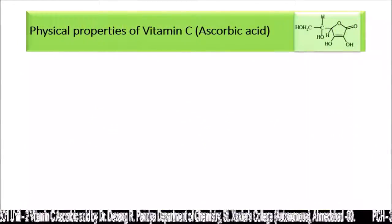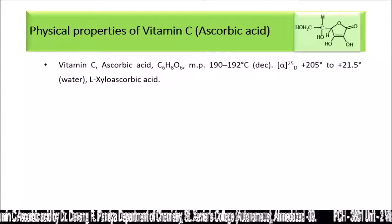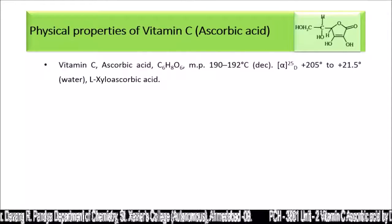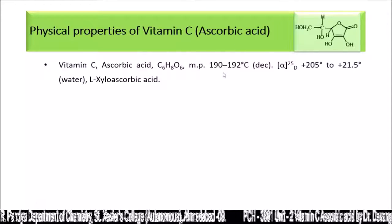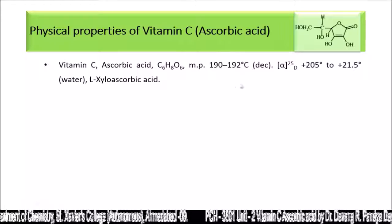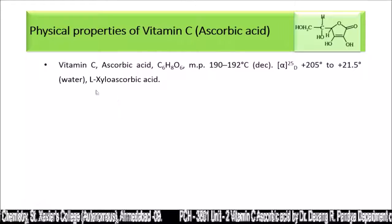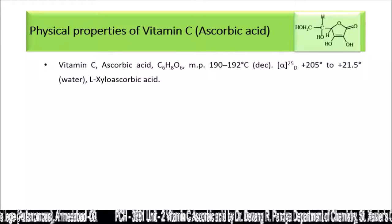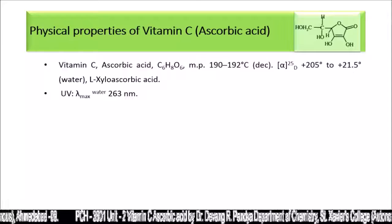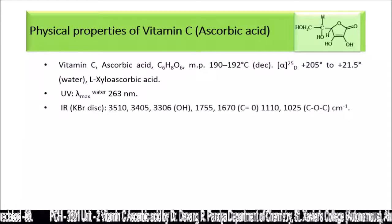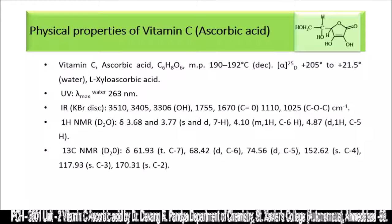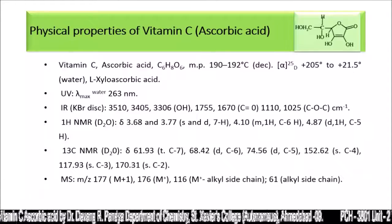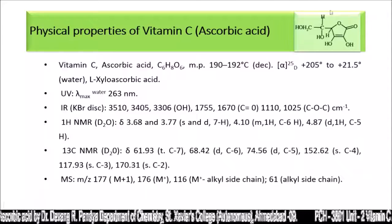Physical properties of vitamin C: ascorbic acid has the molecular formula C6H8O6, melting point between 190 to 192 degrees centigrade, and is also known as L-Xyloascorbic acid. It is water-soluble. UV, IR, NMR, C13 NMR, and mass spectroscopy values are used for the structural elucidation of this compound.